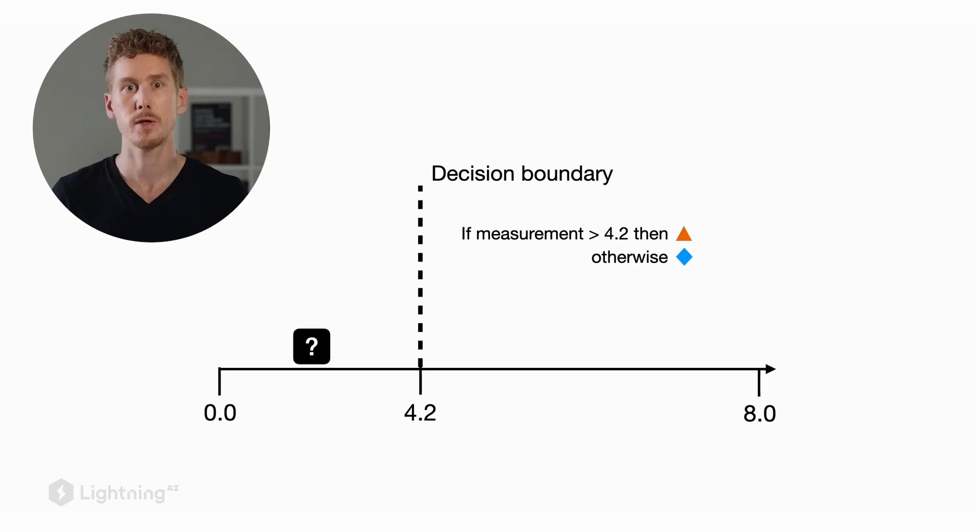Just to emphasize again, the goal of machine learning is really to label new data. So if we are given a new data point, such as this question mark here placed somewhere between zero and 4.2, we can use our decision boundary to classify it. And in this case, because it's on the left side of the decision boundary, we would classify it as a blue diamond. So this would be an example of a binary classification task where we have two possible outcomes, class label zero or class label one, or in this case, a blue diamond or an orange triangle.